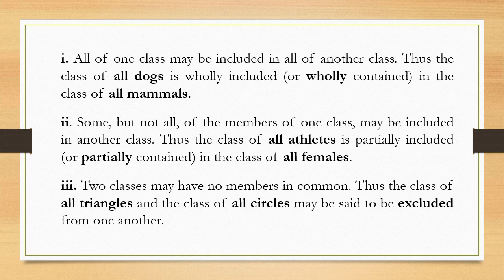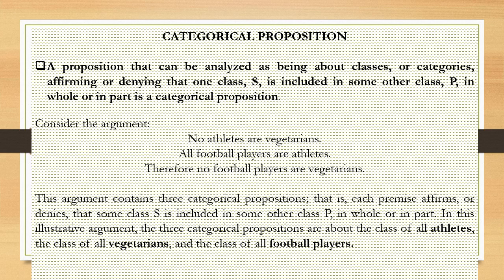Thirdly, the two classes may have nothing in common. The class of all triangles and the class of all circles may be said to be excluded from one another — no triangles are circles. A categorical proposition is one that can be analyzed as being about classes or categories, affirming or denying that one class S is included in some other class P in whole or in part.